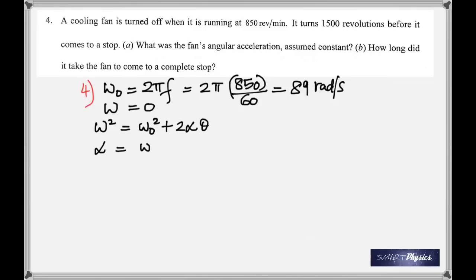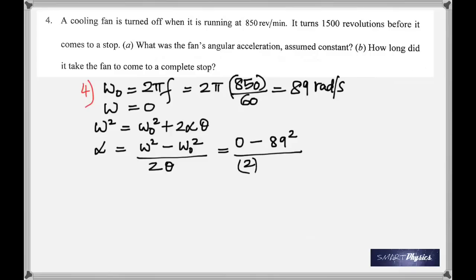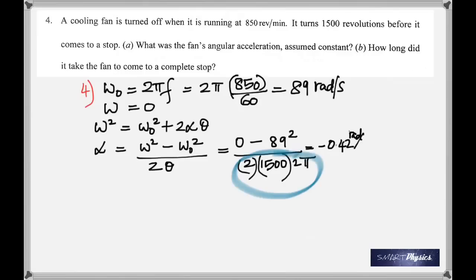This equation corresponds to the linear motion equation v² = v₀² + 2ad. Rearranging to find alpha, substitute the numbers — the angle is 1,500 × 2π because in each rotation the angle described is 2π radians. That gives −0.42 rad/s². The negative is because it's slowing down.